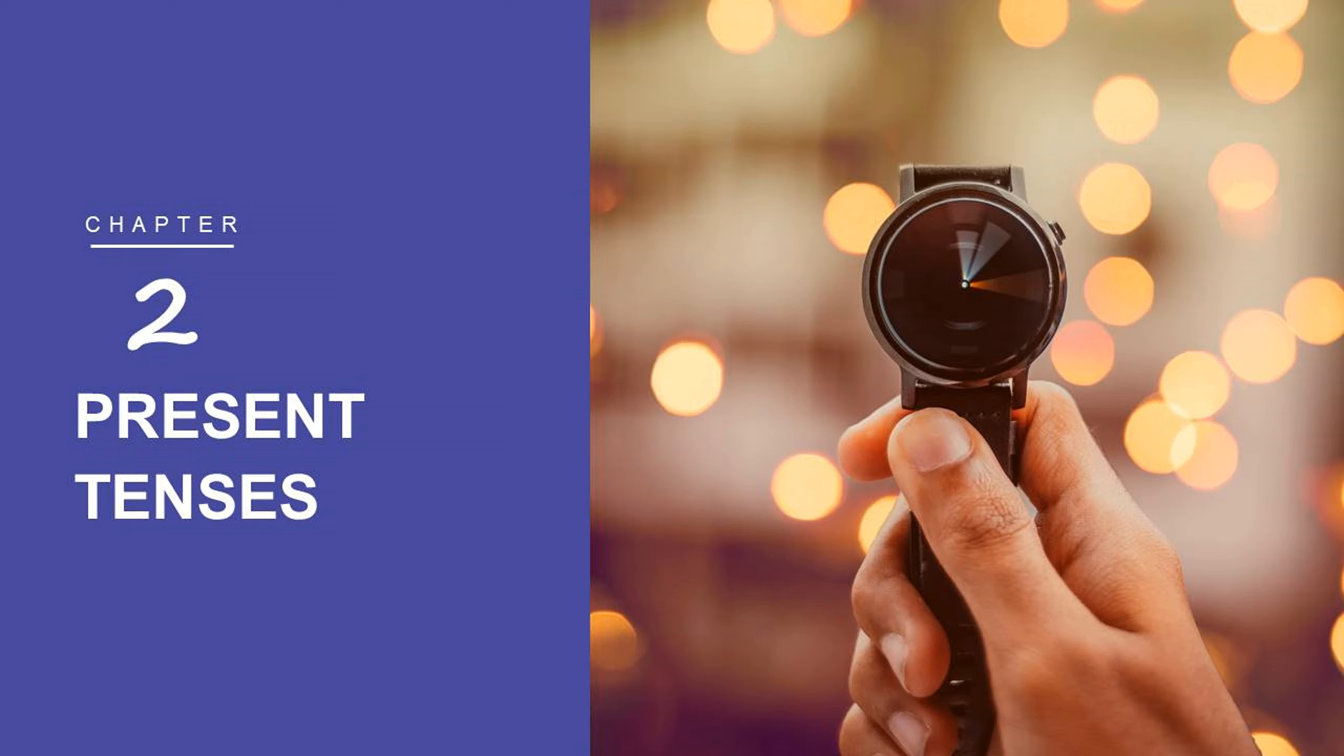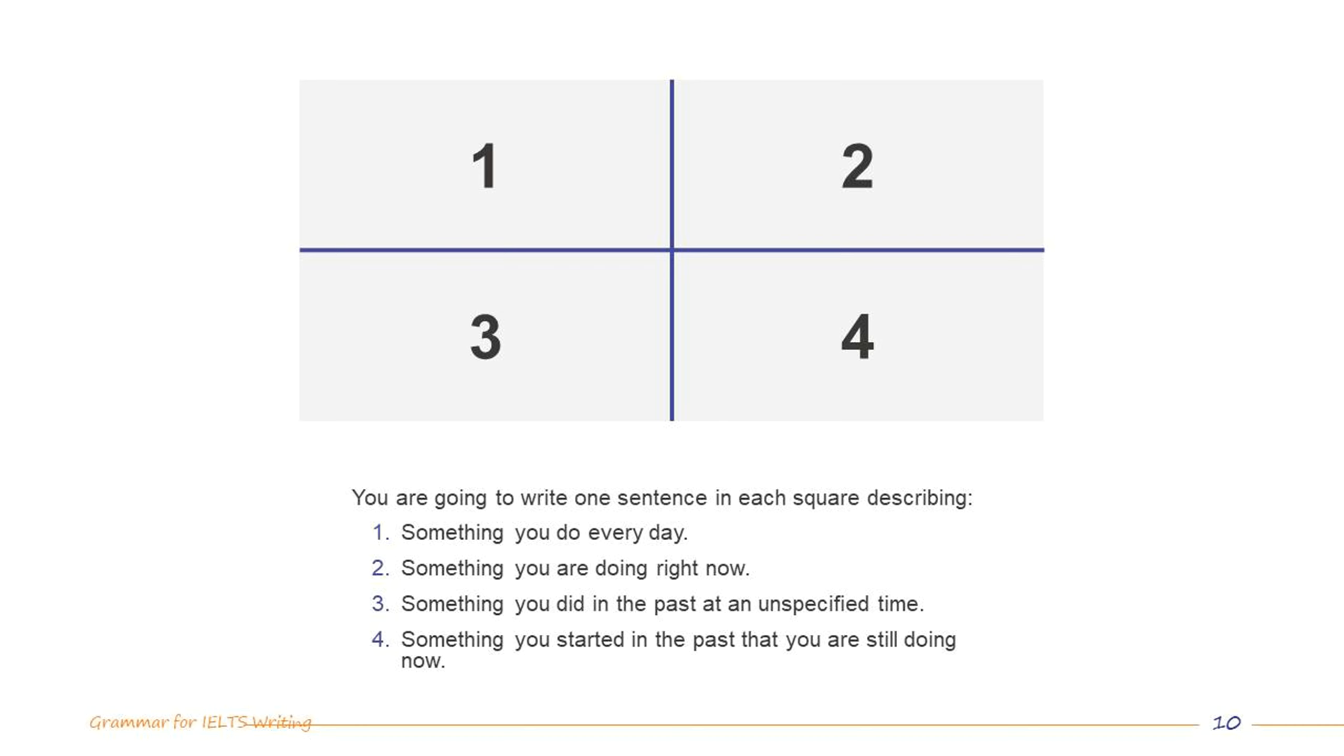To explain the present tenses, I would ask you first to take a piece of paper and draw two lines through the middle, one from top to bottom and the other from left to right. You end up with a grid split into four sections.